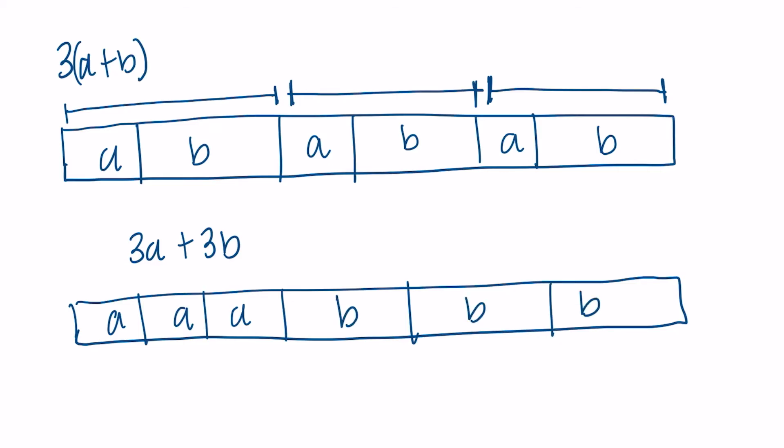And then 3 b's. So they're equivalent. There's the same amount of a's here as there are here. But there's also the same amount of b's, 3 b's. So they're equivalent. They're just written a different way.